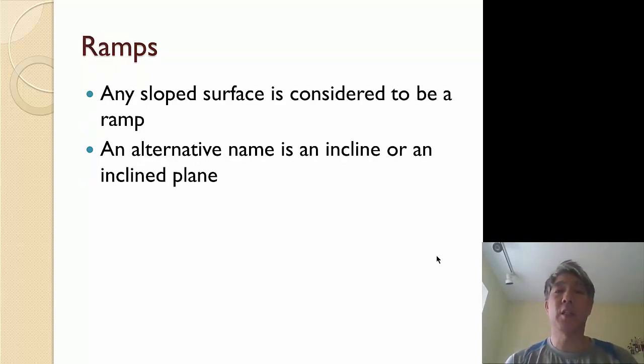First off, a ramp is any sloped surface. As long as it's at an incline, you could even consider a horizontal surface to be a ramp with an angle of zero, or a vertical surface to be a ramp with an incline of 90 degrees. An alternative name for a ramp is an incline or an inclined plane.